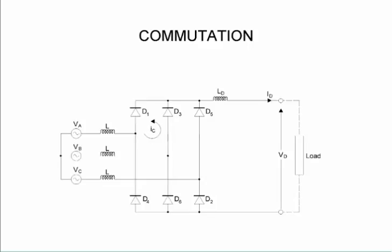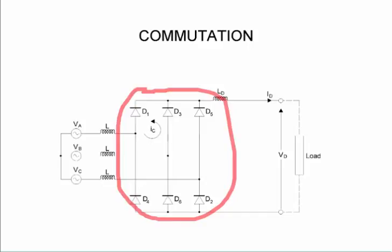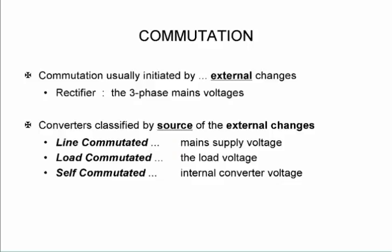Commutation happens because we've got a three phase supply and we normally have six diodes or six thyristors. Depending on where the phase voltage is, we'll start off by D1 conducting and then D2 will take over from D1 until it conducts the full load current. So commutation initiated by external changes, that's our three phase mains voltage. So we can have line commutated, we can also have load commutated, and we can have self commutated where we have an internal converter voltage.